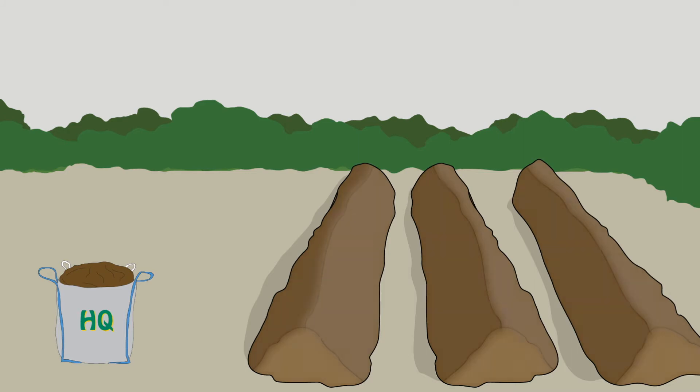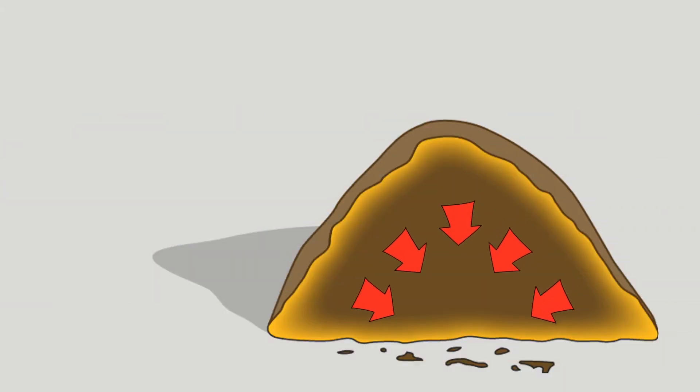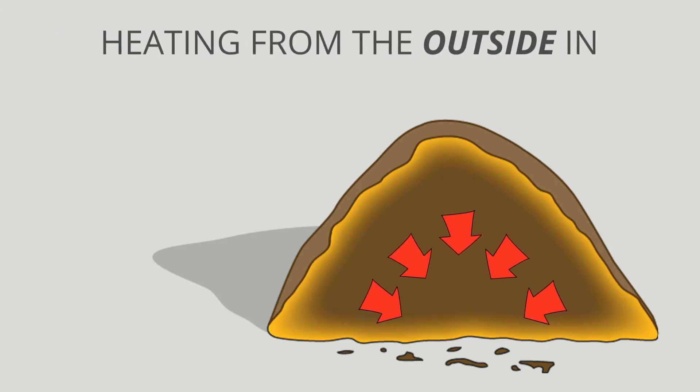The result of this microbial activity is a reversing of typical composting physics. Rather than heating up inside the pile first, the MSAP process causes the outside of the pile to become very hot before permeating to the inside. This offers a number of benefits to the manure composter.